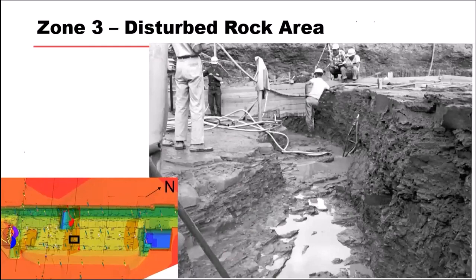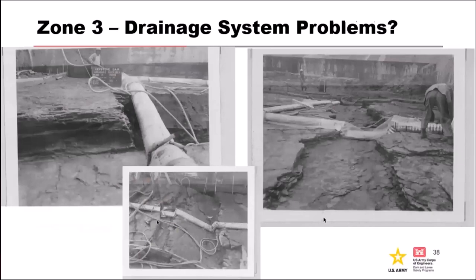Another finding was drainage system problems in the stilling basin. We were wondering why we think the stilling basin slabs would have uplift pressure problems. The drainage system used a half-round pipe stepped over disruptions in the bottom excavation — mainly through the faulted areas. Everywhere there was some disruption in the bottom excavation, they didn't really remove that material; they just stepped the drain over it. So we asked: what's the likelihood of having drainage problems?